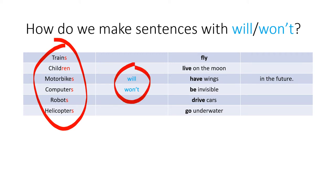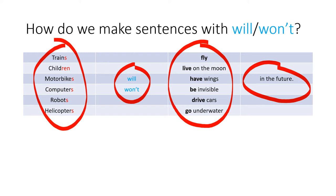Then we have will or won't. Next we have the verb. We can use whatever verb we want, for example fly or live or have. And finally we have in the future. So an example sentence we could say is motorbikes will be invisible in the future.